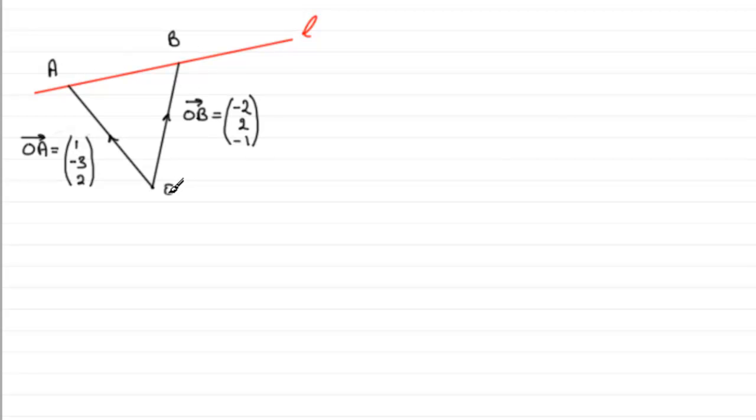And we're told that relative to a fixed origin O, the position vector of A, OA, is i minus 3j plus 2k. And similarly for the position vector of B, it's OB which is minus 2i plus 2j minus k.